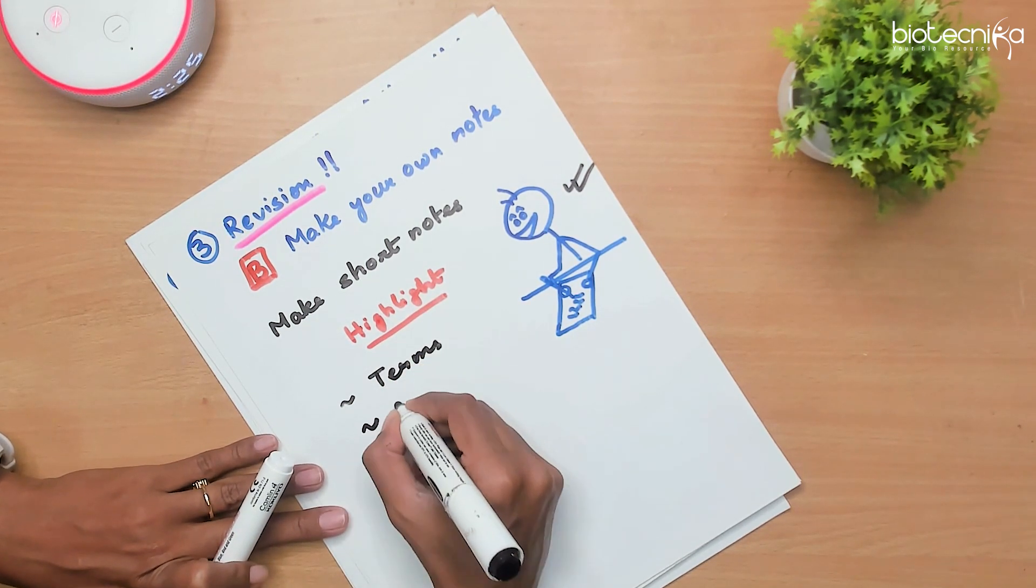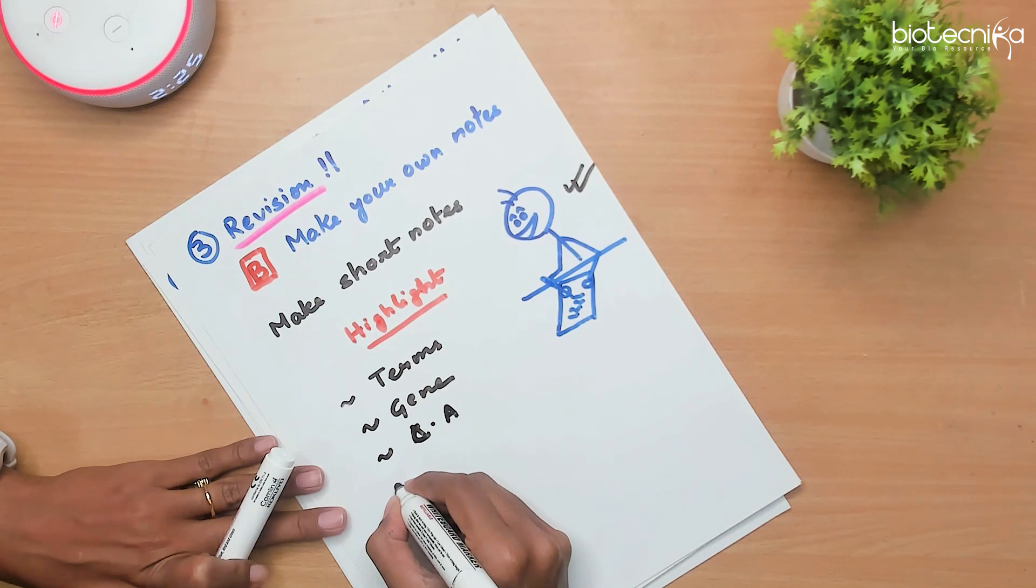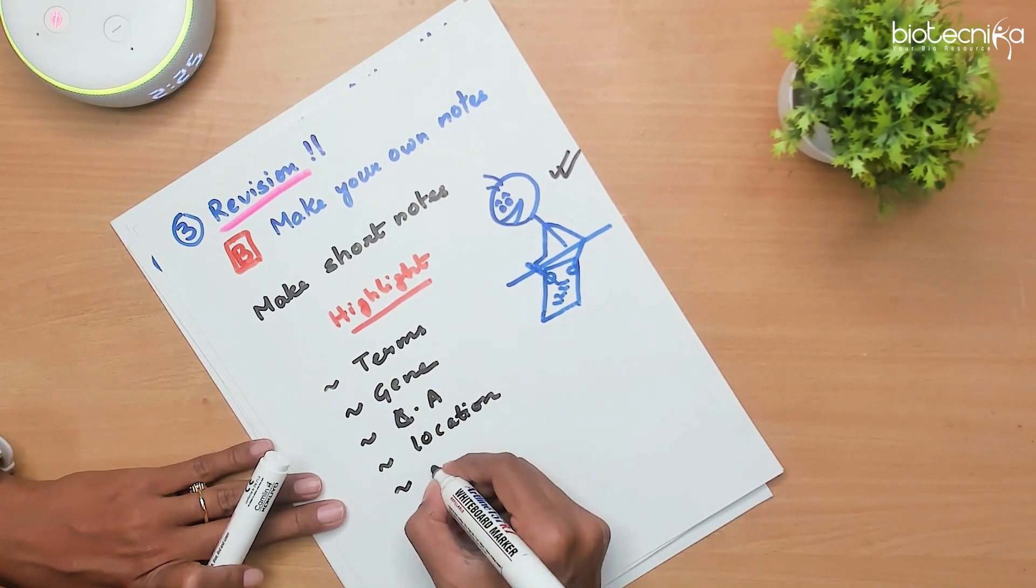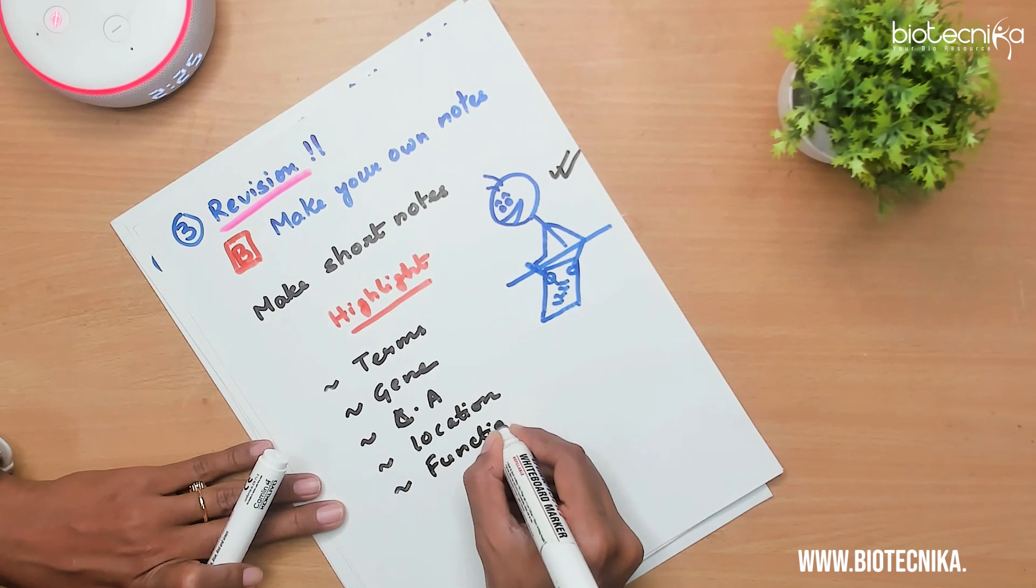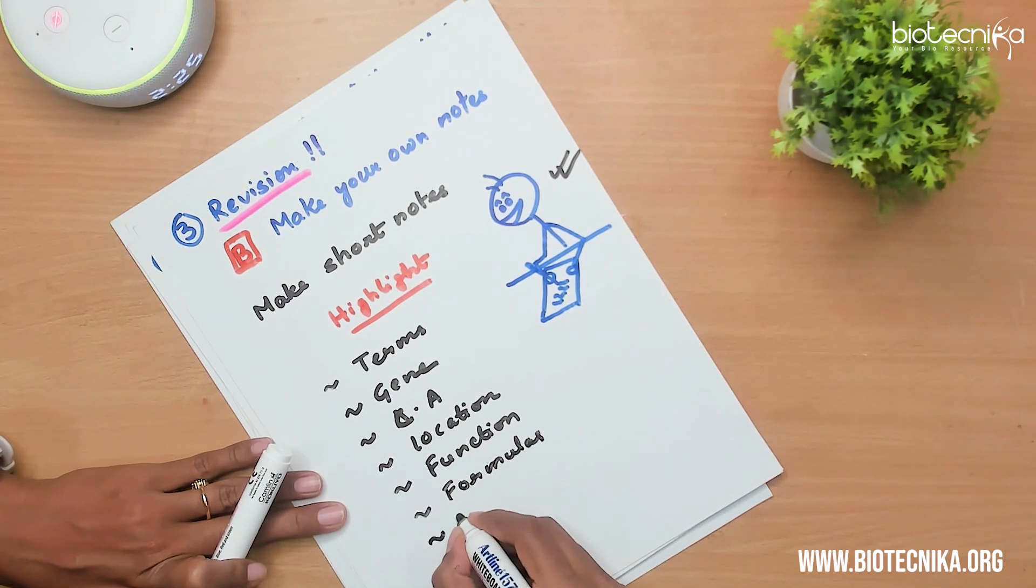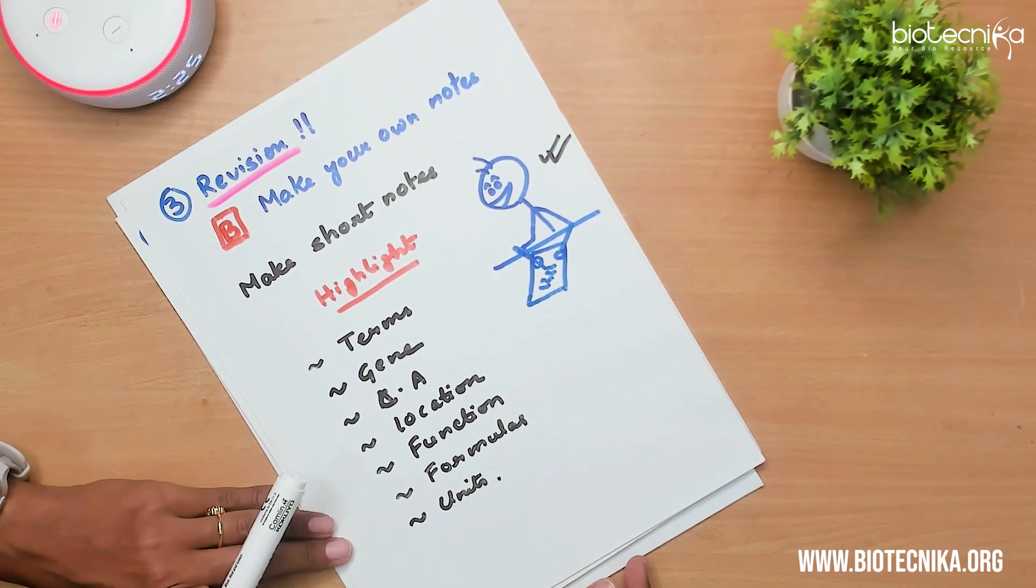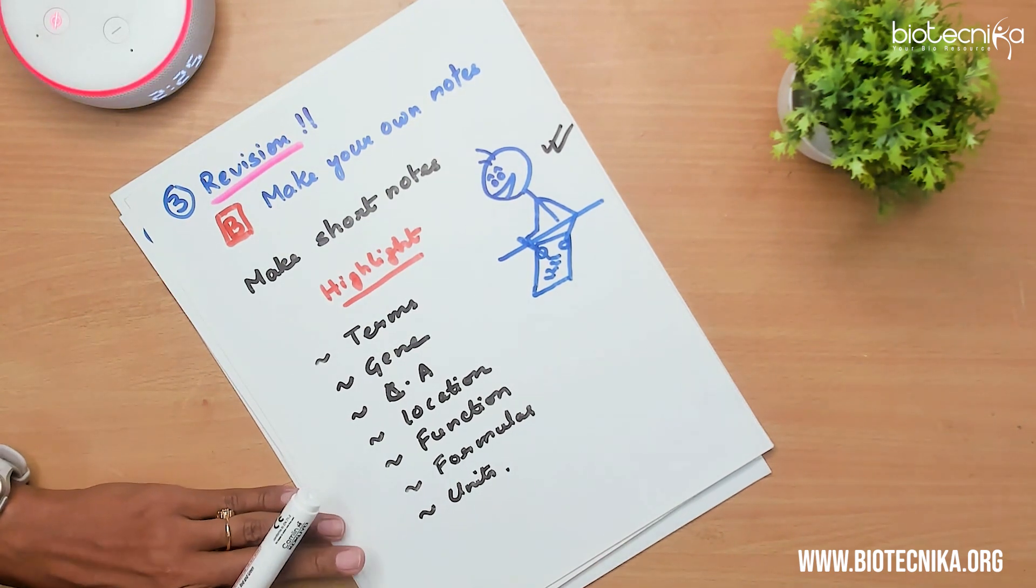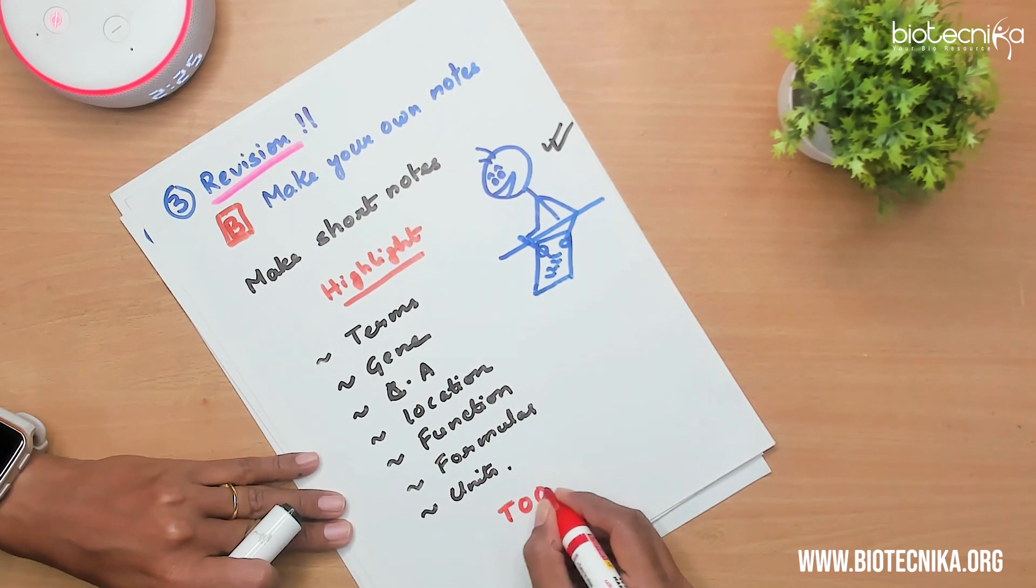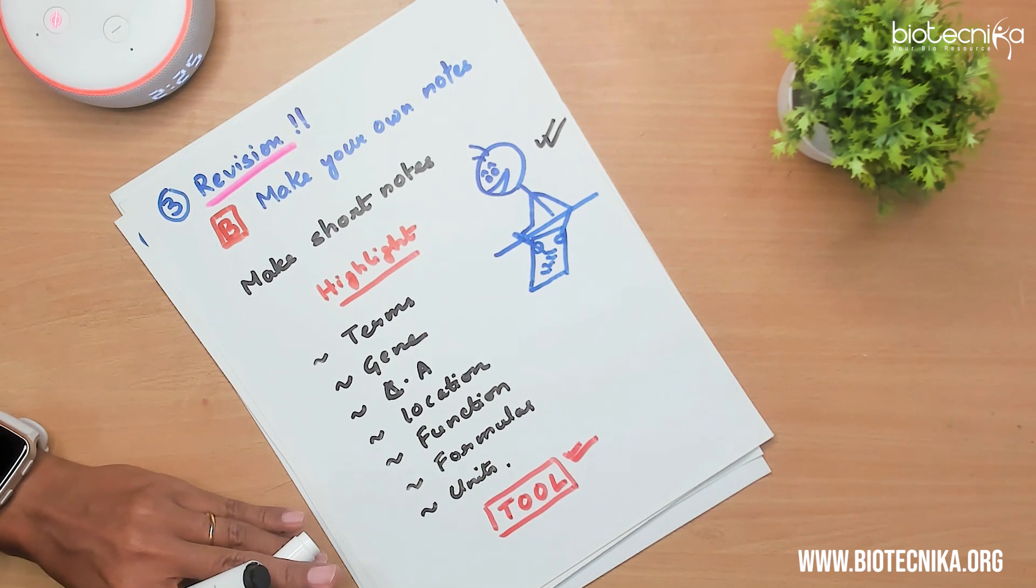Important terms, gene names, causative agents, which disease, what is the causative agent, what is the location, subcellular location or location of a particular process, what is the function of a gene or what is the function of a molecule or a protein, different formulas, highlight all these things. The units which are used like enzymes in enzymes or in pH buffer or thermodynamics, the entropy, enthalpy, all these units should be made very clear. Notes are a very important tool for later revision because you cannot revise from the books from wherever you have studied. So ensure you make proper types of notes.